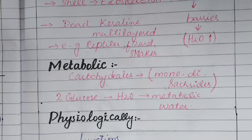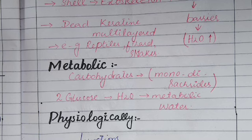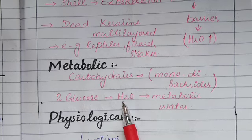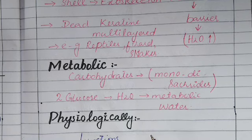Metabolic adaptation means the food that organisms take in contains carbohydrates. Carbohydrates are of three types including polysaccharides and disaccharides, which are present in food so that their breakdown can happen more easily and their utilization in the body is efficient. For example, when maltose breaks down into two glucose molecules, it releases water molecules. This water is metabolic water, which organisms utilize for their metabolic processes.